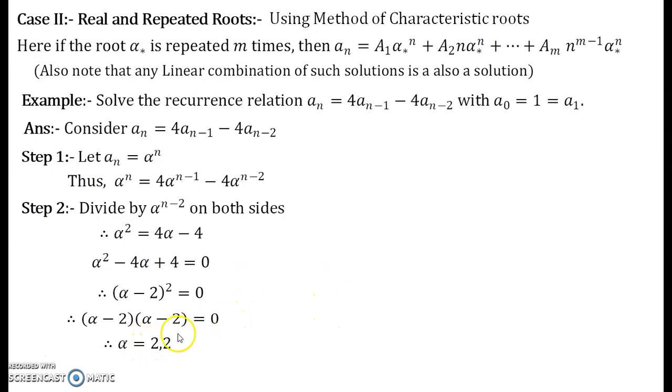Now you have the root that is repeated twice. So I now say that α₁ is a root which is 2 and it is repeated 2 times. So compare it with the theory that I have given you over here. Alpha star that I have written instead of star I have 1. So α₁ is repeated 2 times.